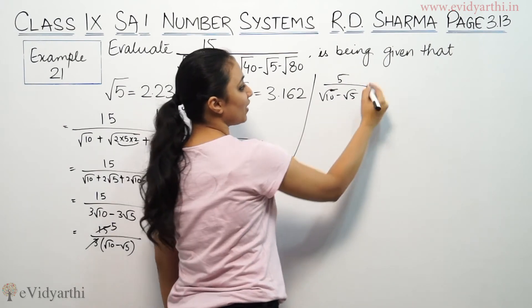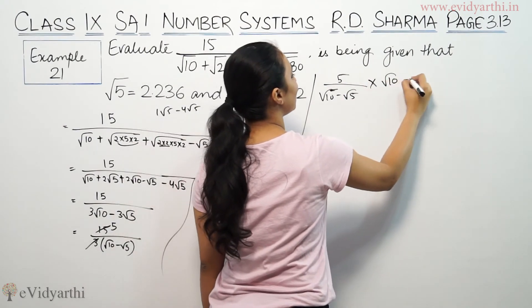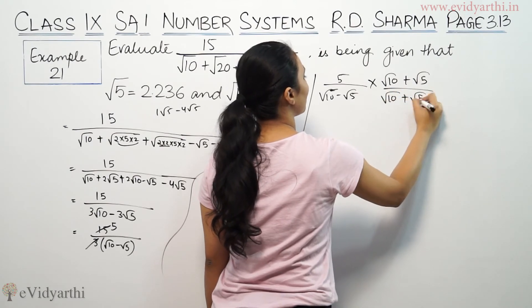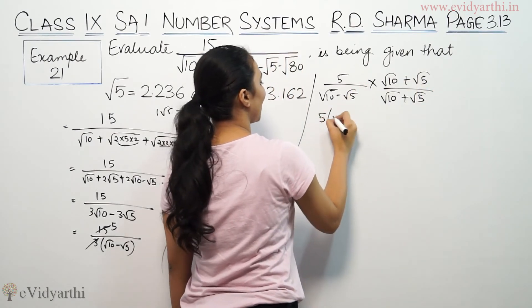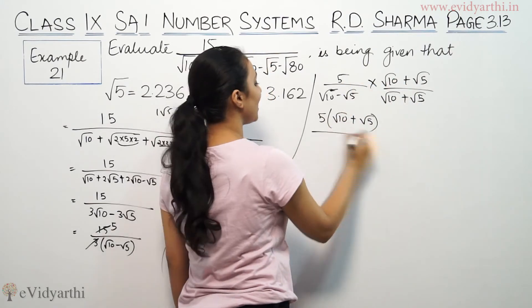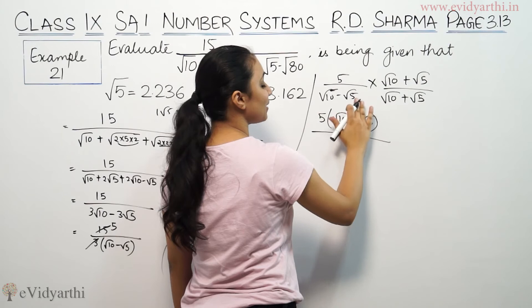So we multiply by root 10 plus root 5 by root 10 plus root 5. This gives 5 bracket root 10 plus root 5 in the numerator.